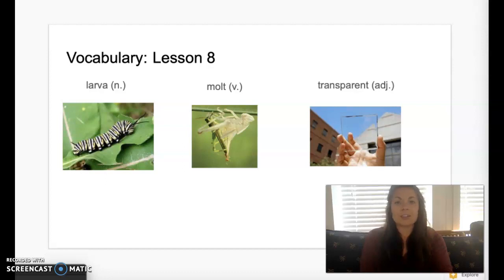Hi, 2nd graders. Today's story is from Knowledge 6 Lesson 8 called The Life Cycle of a Butterfly. Before I begin our story, I'm going to introduce you to our vocabulary words.